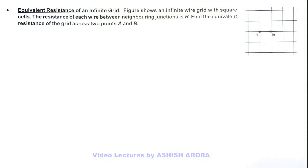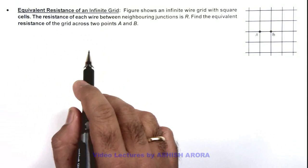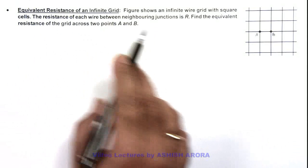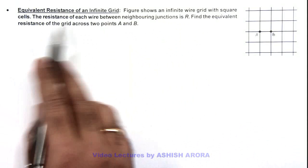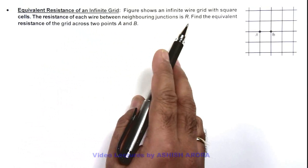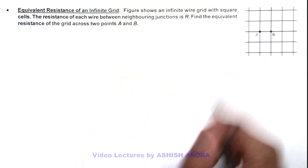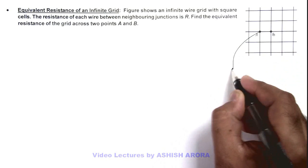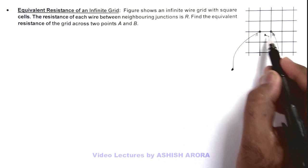In this illustration we'll demonstrate how to calculate the equivalent resistance of an infinite grid. Here the figure shows an infinite wire grid with square cells, and the resistance of each wire between neighboring junctions is R. We are required to find the equivalent resistance of the grid across these two points A and B, and the resistance of each wire here is R.